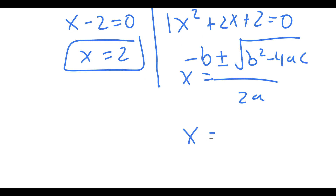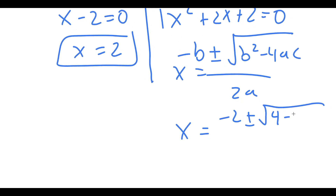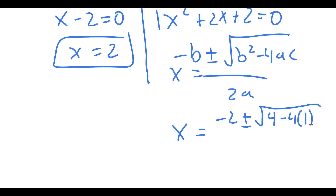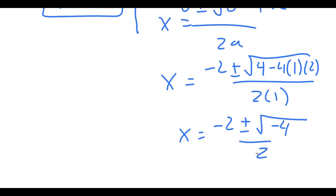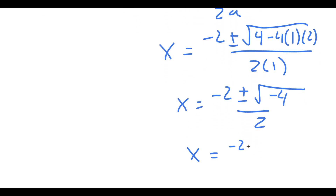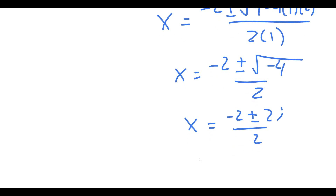And for x² plus 2x plus 2 equals 0, I can use the quadratic formula. So I get x is equal to negative 2 plus or minus the square root of 2² which is 4, minus 4 times a which is 1, times c which is 2, all over 2a. This equals negative 2 plus or minus the square root of negative 4, over 2, which equals negative 2 plus or minus 2i over 2, which is negative 1 plus or minus i.